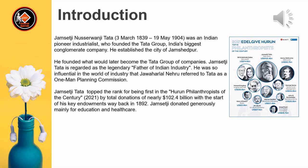Jamsenji Tata, 3 March 1839 to 19 May 1904, was an Indian pioneer industrialist who founded the Tata Group, India's biggest conglomerate company. He established the city of Jamshedpur and founded what would later become the Tata Group of Companies. He is regarded as the legendary father of Indian industry. Jawaharlal Nehru referred to Tata as a 'one-man planning commission.' Jamsenji Tata topped the ranks as the foremost philanthropist of the century, with total donations of nearly $102.4 billion, with key endowments starting as far back as 1892. He donated generously, mainly for education and healthcare.